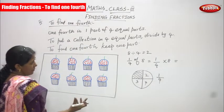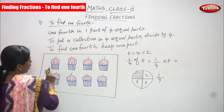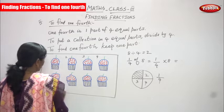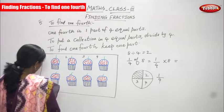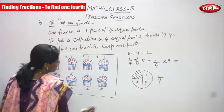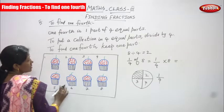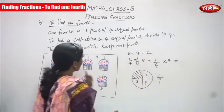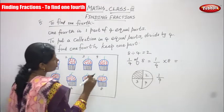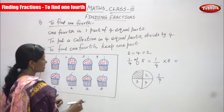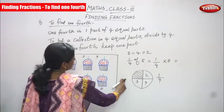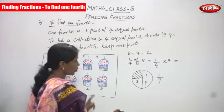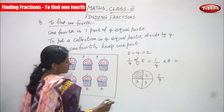Now look at this — how many cupcakes? One, two, three, four, five, six, seven, eight. I've drawn eight cupcakes. So eight is going to be divided by four, and you can get two. Eight is the total number of cupcakes, and we are going to cut them into four equal parts. Four equal parts means each part has two cupcakes, so one fourth means one by four.